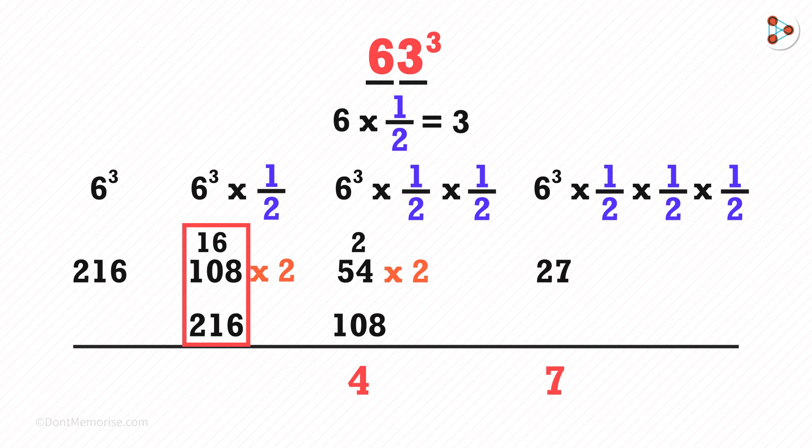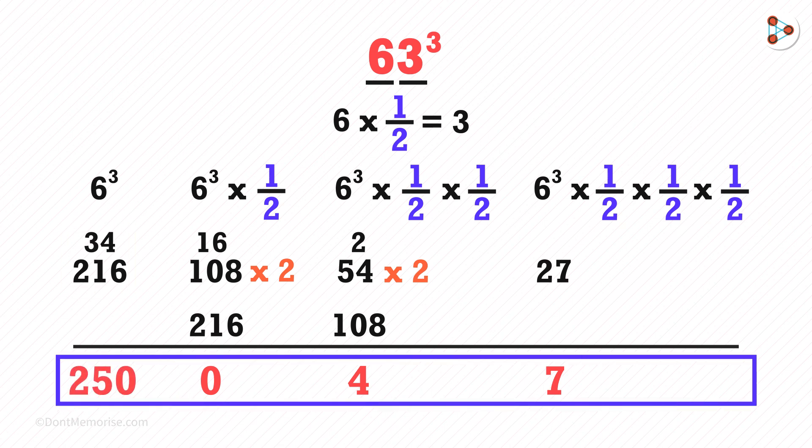The sum of these three is 340. We write 0 here, and 34 is carried forward. And we get this sum as 250. So here's our answer of 63 cubed.